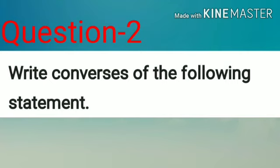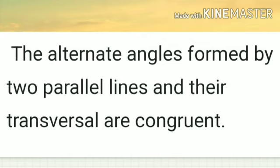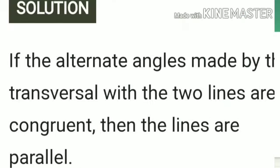Question number 2: write the converse of the following statements. Here we have to write the converse statement — one statement is given and you have to write its converse. First: the alternate angles formed by two parallel lines and their transversal are congruent. The converse statement is: if the alternate angles made by the transversal with two lines are congruent, then the lines are parallel.